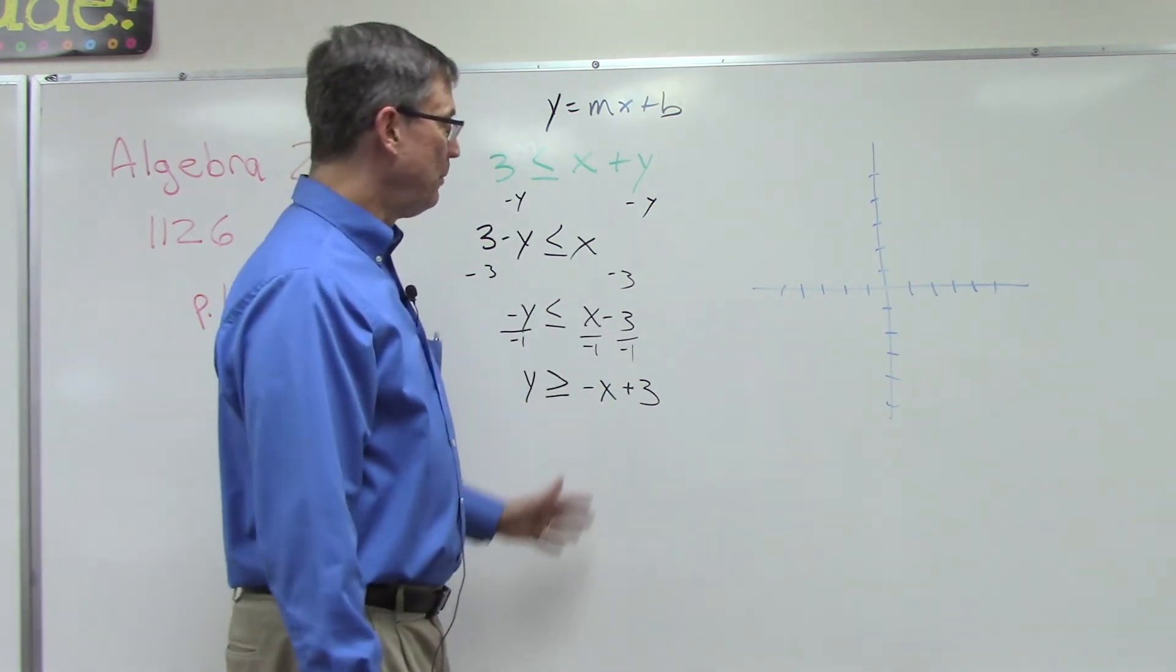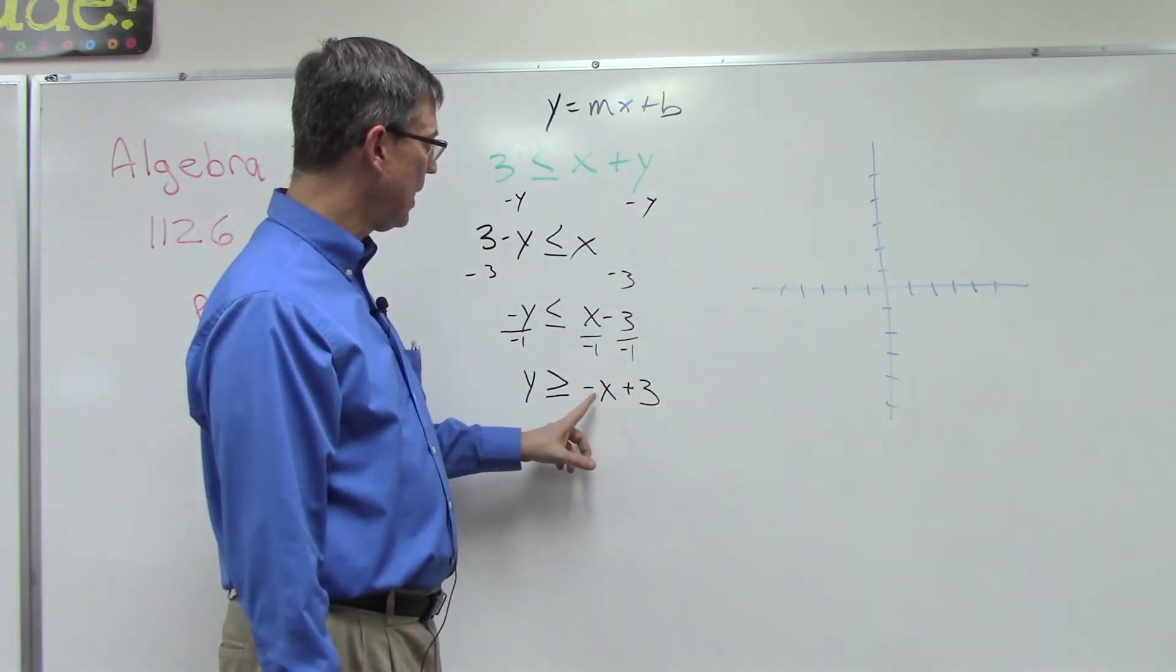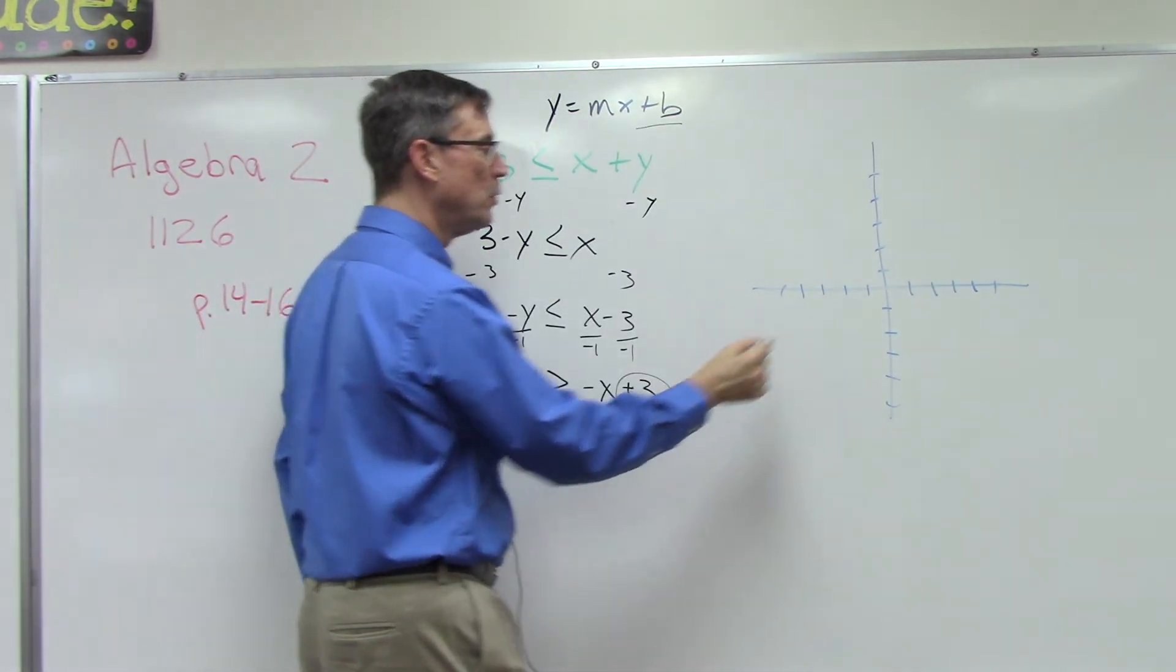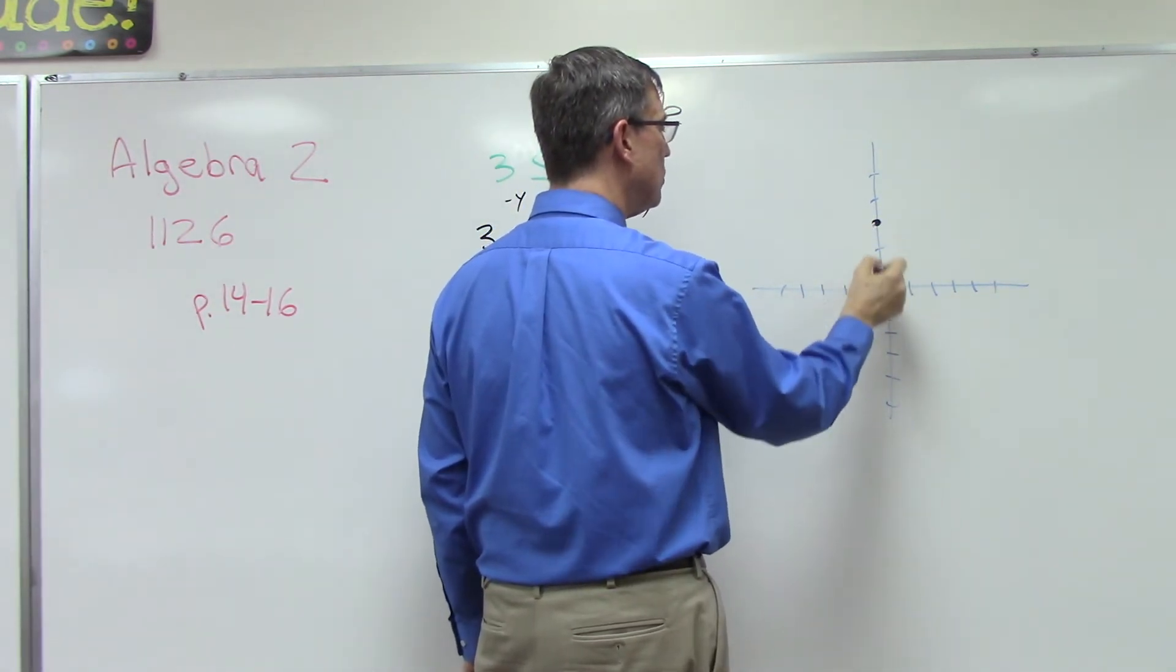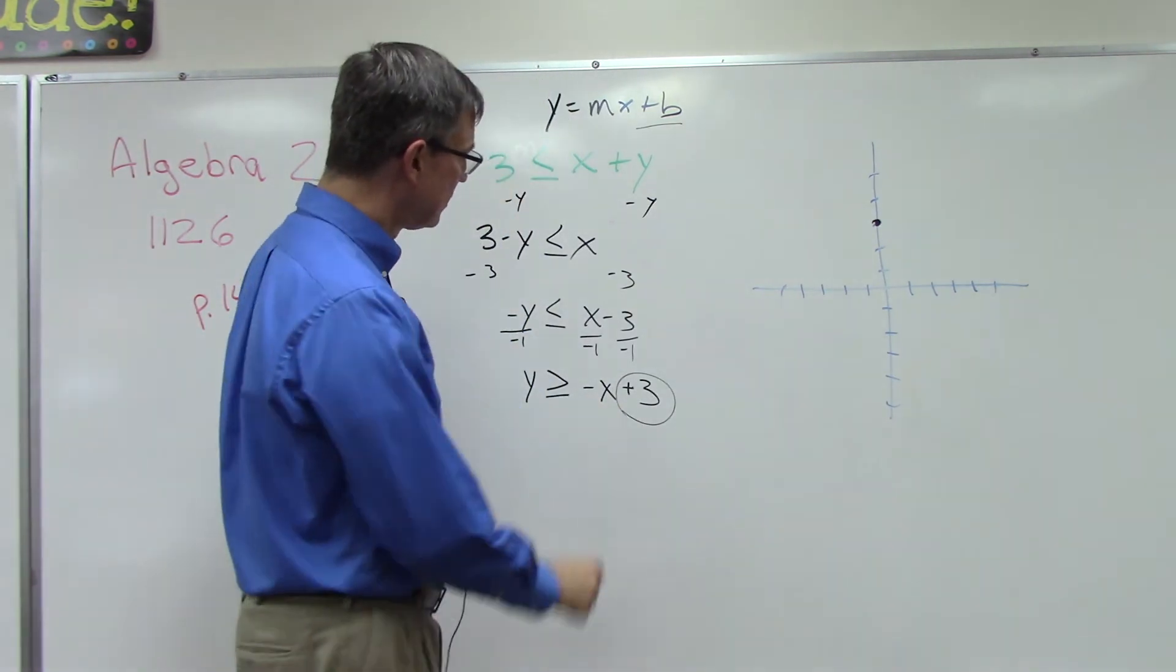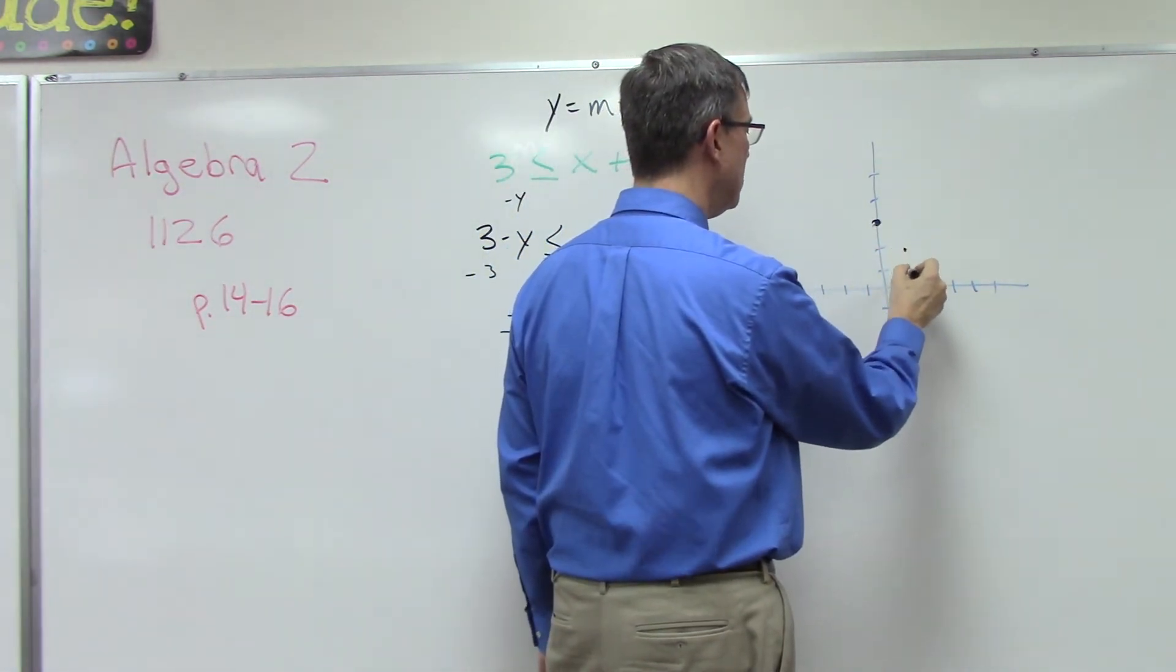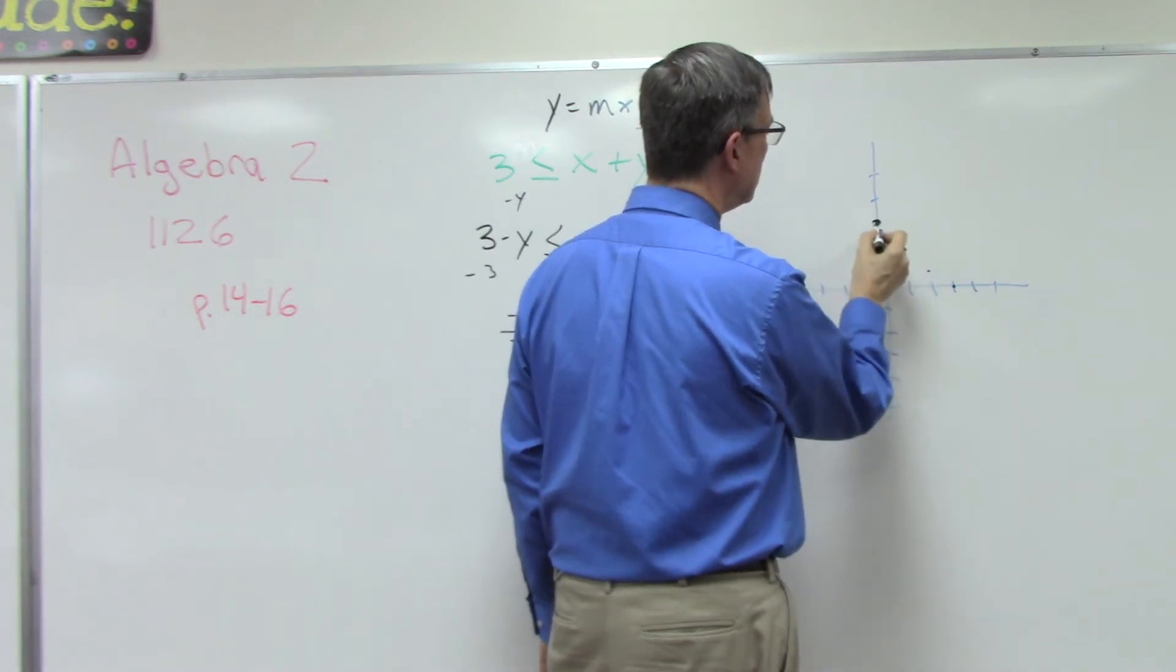And if you remember from previous math courses, let's review real quick. This part is the b—that tells me where it's going to cross the y-axis. So I can go up here to one, two, three—three on the y-axis is where it's going to cross. The slope is negative one, which means I'm going to come down one over one, down one over one, down one over one. So this is the line.